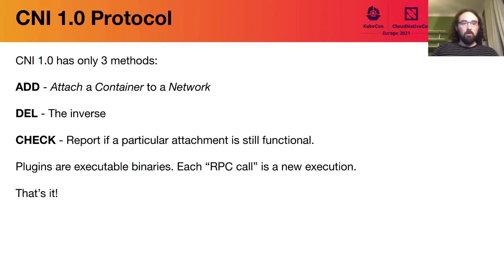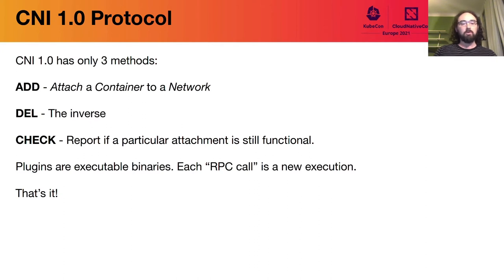The execution protocol has only three methods. It is a simple RPC-style protocol with three methods: add, del, and check. Add concerns creating an attachment — it says please attach this container to this network. Delete is the inverse of that. Check is to report if a particular attachment is still functional — asking a plugin to validate that everything is still configured appropriately. We go into a much deeper dive on the specifics in the KubeCon 2020 talk, and CNI 1.0 really doesn't change anything from that talk, so it's still accurate.